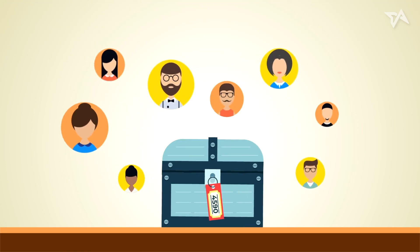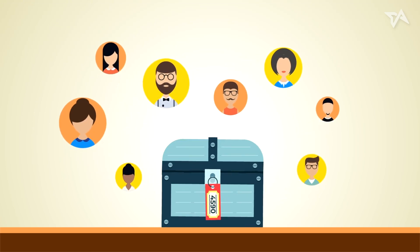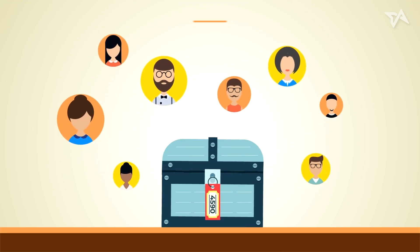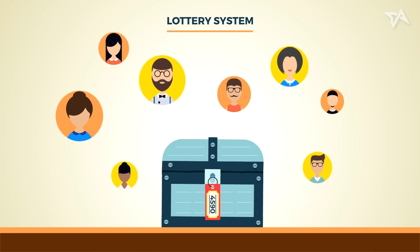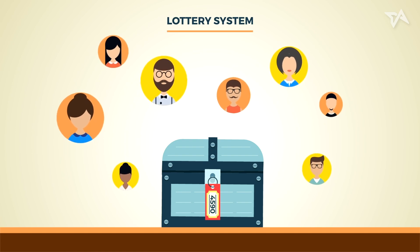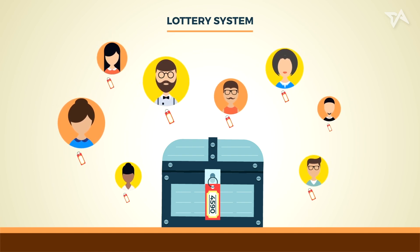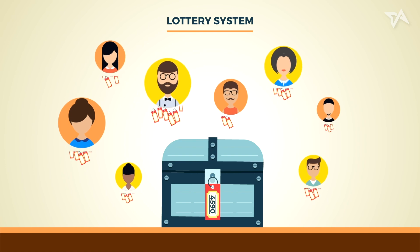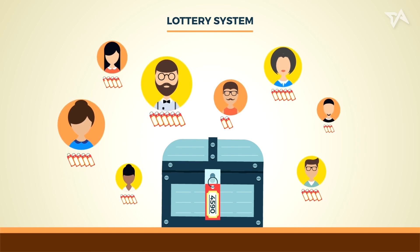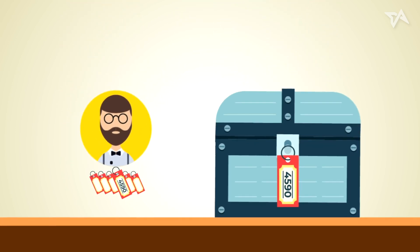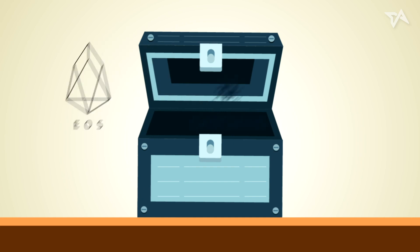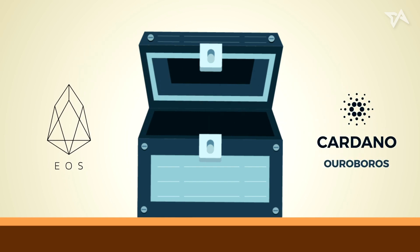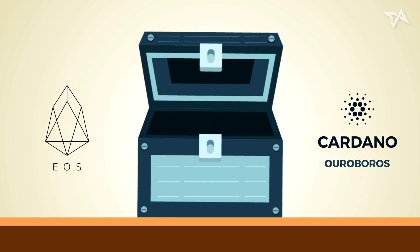Picture a group of treasure hunters vying for a chest. The chest is rewarded based on a lottery system. To participate, each hunter has to buy lottery tickets. The more each hunter buys, the higher the chance of winning. Blockchain protocols like Cardano's Ouroboros and EOS adopt the proof-of-stake consensus.